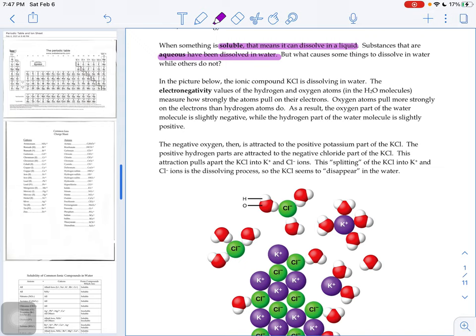You might remember the term electronegativity from our bonding chapter. Electronegativity measures how strongly atoms pull on their electrons in a bond. And if you were to compare the electronegativity of oxygen versus hydrogen, oxygen pulls more strongly on the electrons than the hydrogen atoms do in a water molecule.